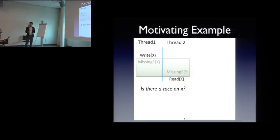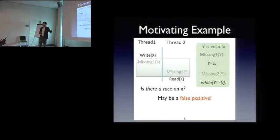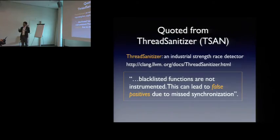Yes or no? Maybe a false positive. The reason is if the missing events in this missing method introduce synchronization, then there is false positive. For example, when y is volatile, and inside the missing method 1, you assign y to 1. And in missing method 2, you have a while loop which checks the value of y. If it's 0, you continue waiting. So essentially, this behavior introduces happens-before between write x and read x. So this is a very simple example. But this happens a lot in practice.